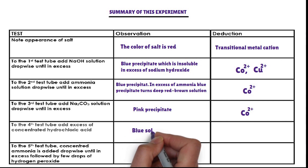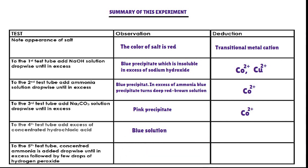Confirmatory tests. First confirmatory test: to the fourth test tube, excess of concentrated hydrochloric acid is added. The cation that forms a blue solution when it reacts with concentrated hydrochloric acid is cobalt-2 ion. Cobalt-2 ion is confirmed. The cation present in the salt is cobalt-2 ion.